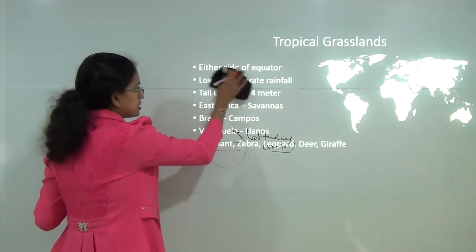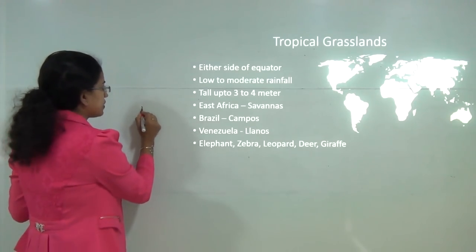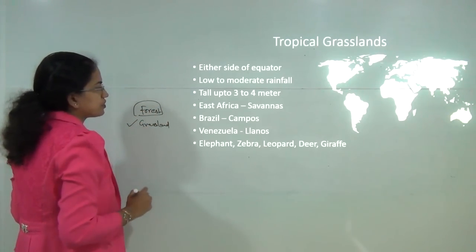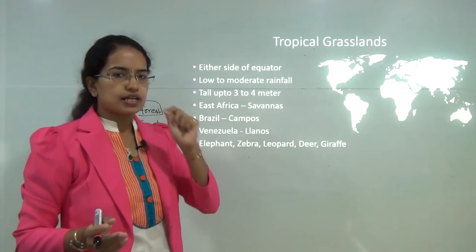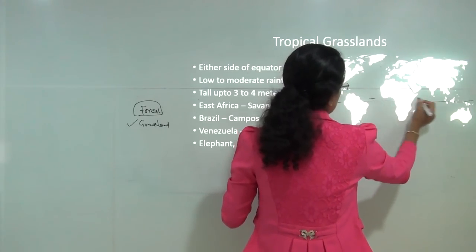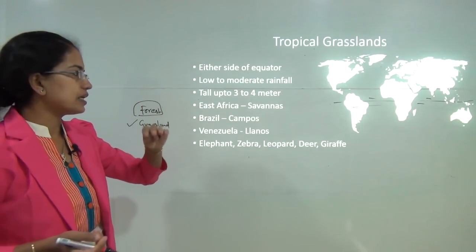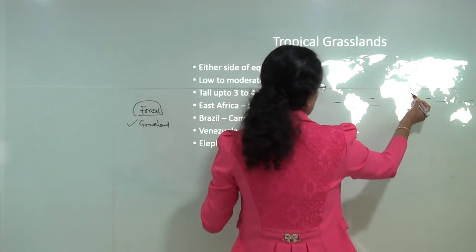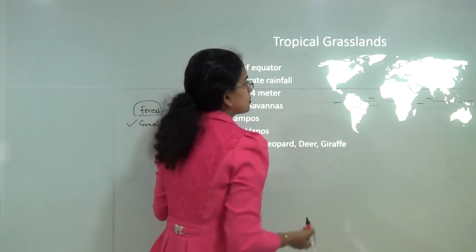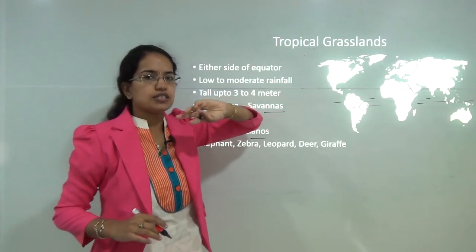Next we move to grasslands. We can classify grasslands into two types: tropical and temperate. Tropical grasslands occur on either side of the equator with low to moderate rainfall. Trees are tall, up to 3 to 4 meters. In East Africa they are known as savannah, in Brazil as campos, and in Venezuela as llanos. The regional names of tropical and temperate grasslands are important to remember.